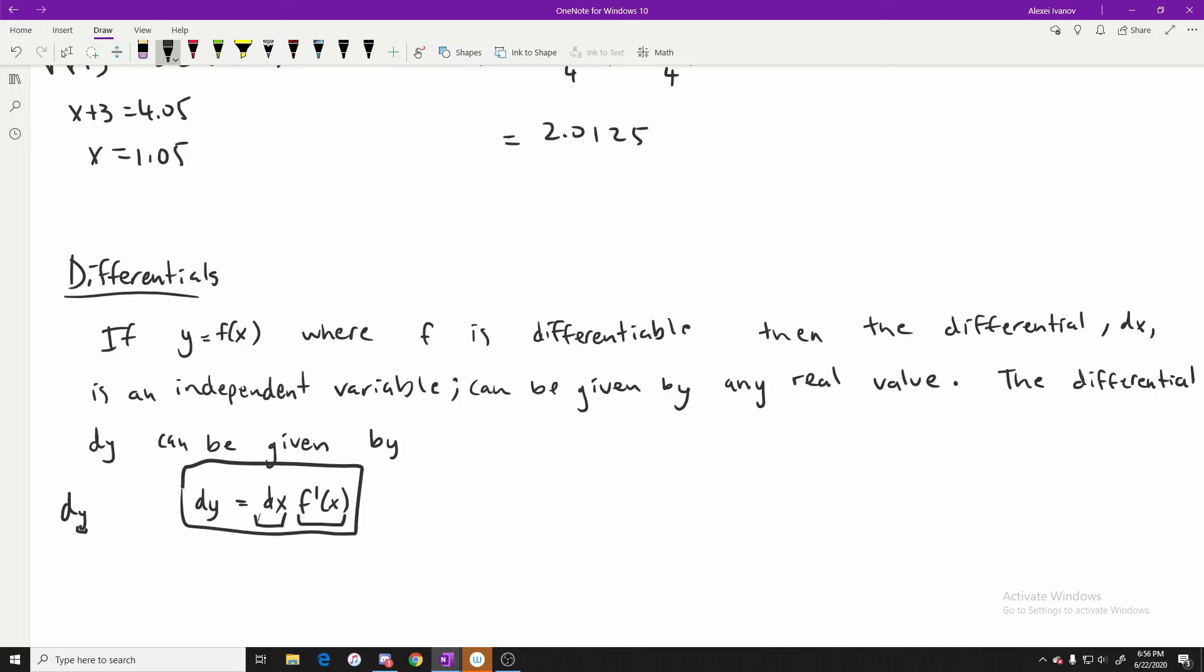So this formula right here is pretty obvious if we use Leibniz notation, where we write that dy/dx is equal to f'(x), meaning this is the derivative of this function right here. And if we just use simple algebraic manipulation, we can cross multiply this dx upward and we'll be left with dy equals f'(x) times the differential at x.